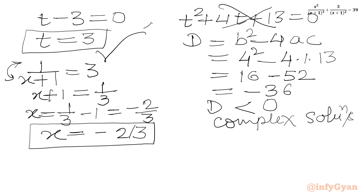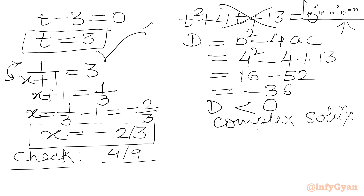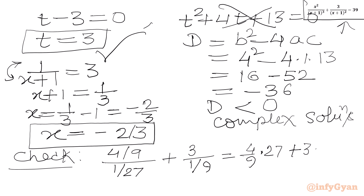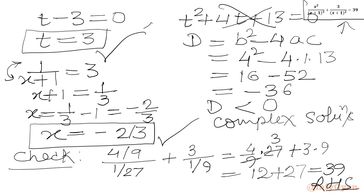Now we can verify our answer. Starting with the LHS: x² = 4/9, and (x+1)³ = (1/3)³ = 1/27. So the first term is (4/9)/(1/27) = 4/9 × 27 = 12. The second term: 3/(1/3)² = 3 × 9 = 27. So LHS = 12 + 27 = 39, which equals our RHS. Hence x = −2/3 is verified.